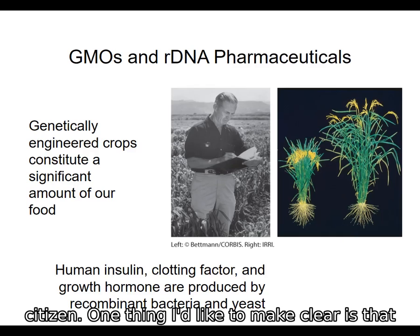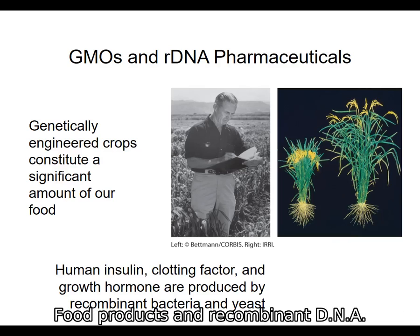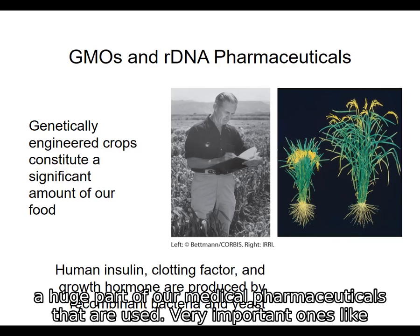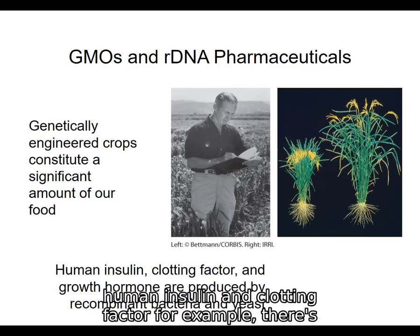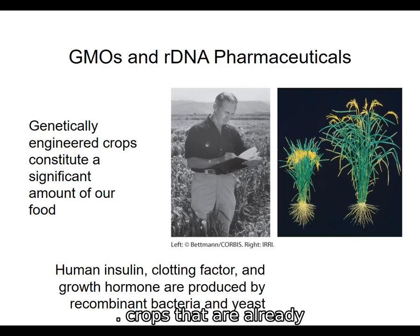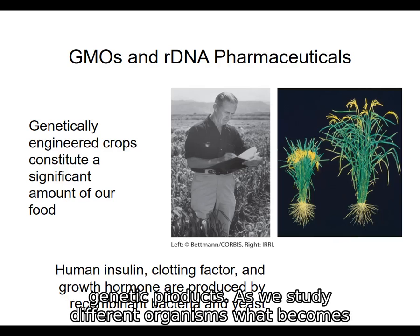At this point, we are heavily dependent on GMO food products and recombinant DNA pharmaceuticals. These are already a huge part of our food supply and a huge part of our medical pharmaceuticals — very important ones like human insulin and clotting factor, for example. There are a lot of these recombinant DNA pharmaceuticals and recombinant DNA crops that are already a big part of our life, so you're already involved with these kinds of genetic products.